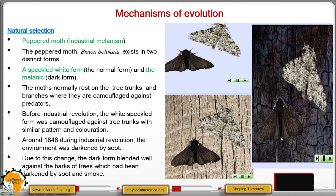After industrialization, this is how the tree trunks looked like. So the white form was exposed to predators while the dark one was camouflaged.